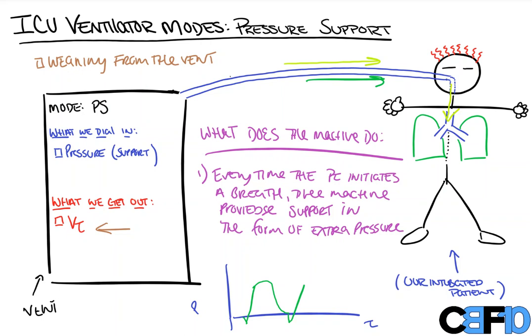We'll let them go on pressure support — maybe 5 or 8, depending on who's doing it — for anywhere from 30 minutes to 2 hours, making sure they are reliably taking adequate tidal volumes for their size, that they're not desaturating, and that they're not becoming apneic. This is also where I should mention that with pressure support mode, we also dial in apnea settings.